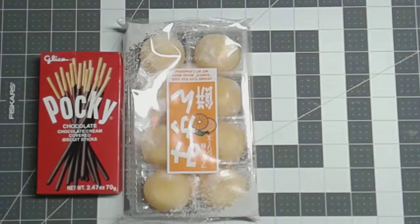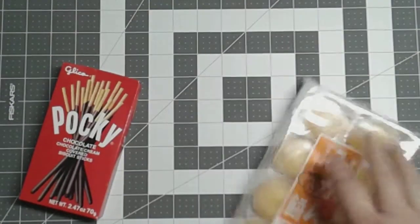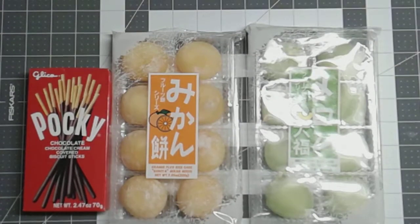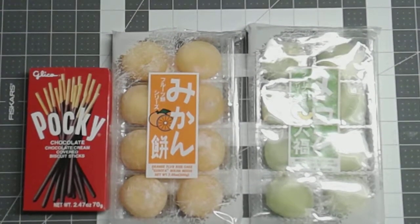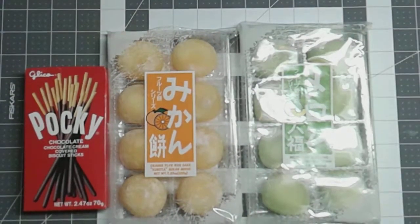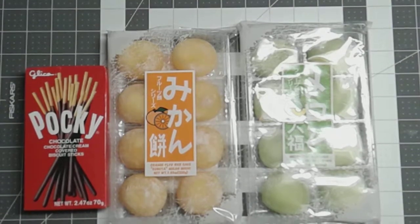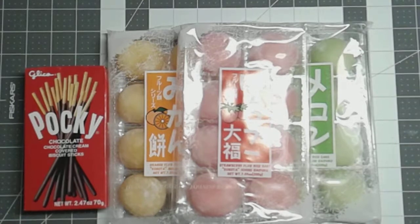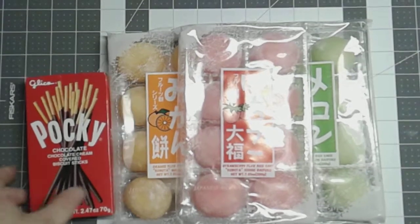These little things are actually new. I've never sold these before. They are flavored rice cakes. So here I have orange melon, then I have strawberry here. Those are four dollars a piece. Again, Pocky's three.